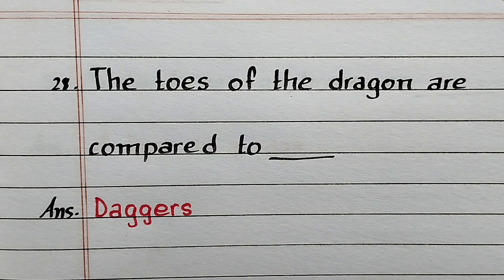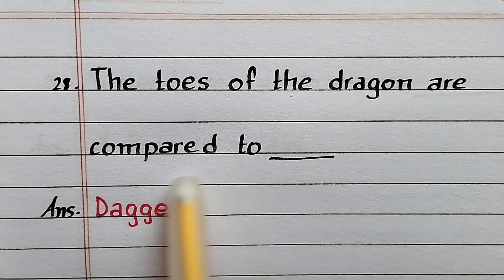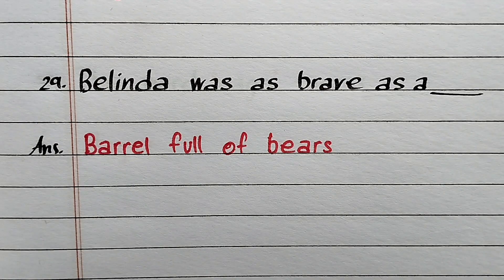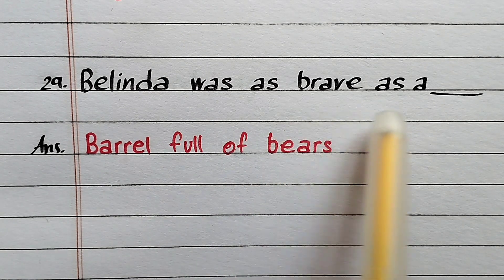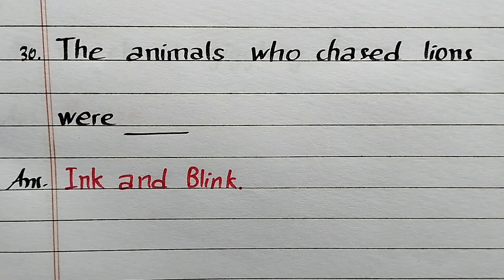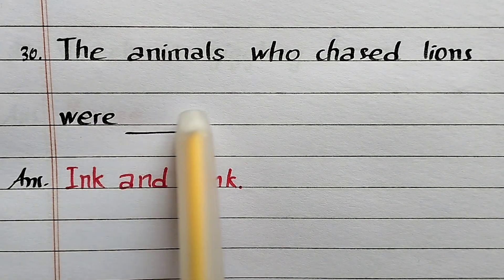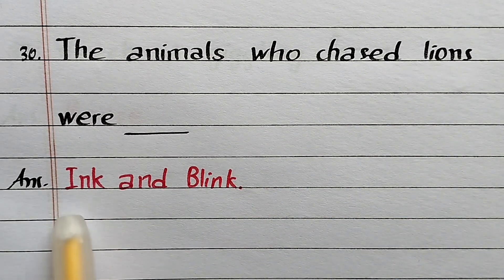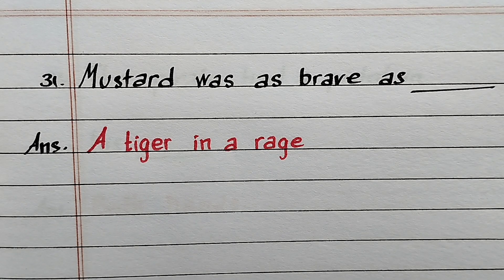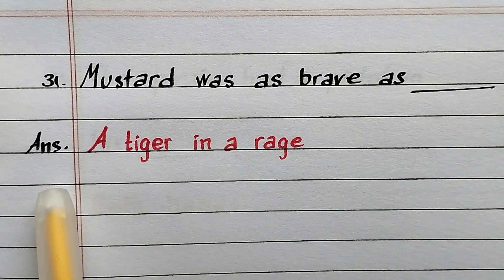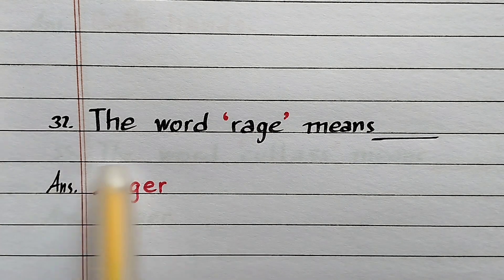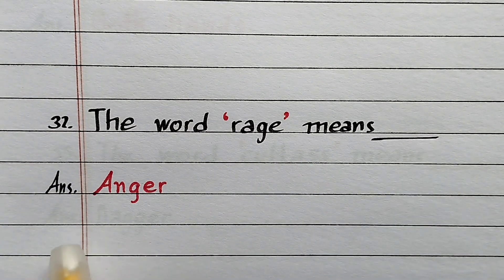Question number 28: The toes of the dragon are compared to ___? Answer: Daggers. Question number 29: Belinda was as brave as ___? Answer: A barrel full of bears. Question number 30: The animals who scared lions were ___? Answer: Ink and Blink. Question number 31: Mustard was as brave as ___? Answer: A tiger in a rage. Question number 32: The word 'rage' means ___? Answer: Anger.